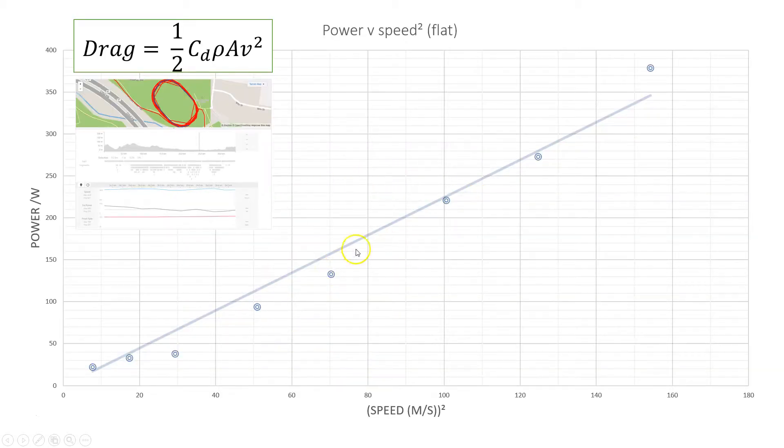And here's just a confirmation of that. I've squared the speed data and I've also converted into meters per second and square of the speed gives a nice linear fit between that and power output. And that corresponds nicely to the drag formula.